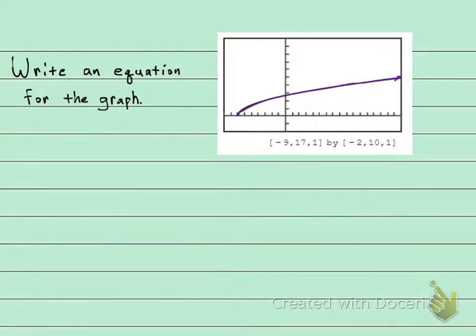y equals the square root of x would look like this. It would start here at 0 and zing. So this is very similar but it has moved 1, 2, 3, 4, 5, 6, 7 spots to the left.